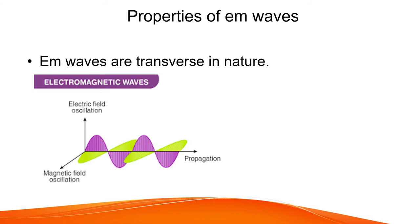In a diagram, the wave propagates along the x-direction, the electric field vector is along the y-direction, and the magnetic field vector is along the z-direction. Whenever the electric field vector reaches its maximum value, the magnetic field vector also reaches maximum value, and whenever the electric field vector reaches minimum, the magnetic field vector also reaches minimum. This means the electric and magnetic fields are in the same phase.